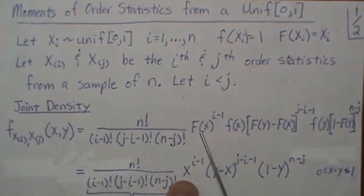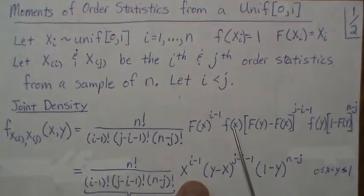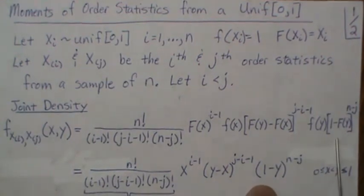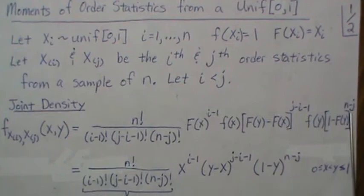So we plug in X here, this is 1, so it goes away. Y, X goes away 1 minus Y, and that's n to the j.